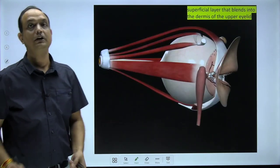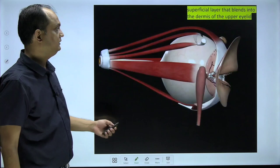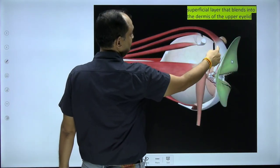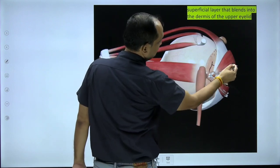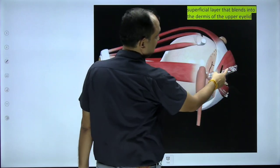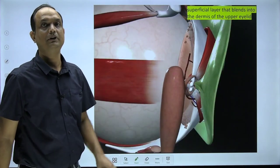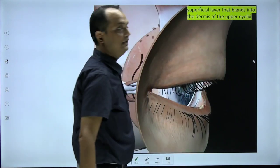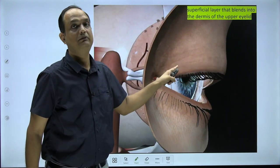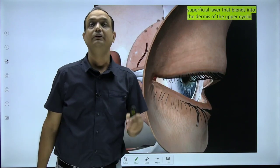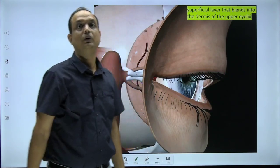In this video clip you can see the levator palpebrae superioris with its anterior fibers becoming aponeurotic as they approach the eyelid. Once the skin is removed, you can see the strands of the aponeurosis passing between the fibers of orbicularis oculi and inserting into the skin. So in dissection, levator palpebrae superioris comes from the deeper place, pierces the orbital septum, then passes through orbicularis oculi to approach the skin of the upper eyelid.